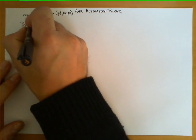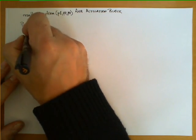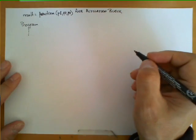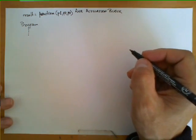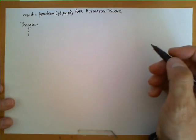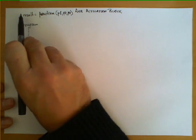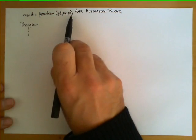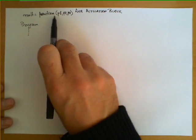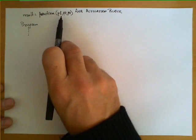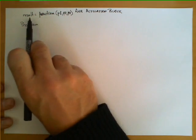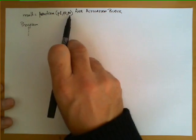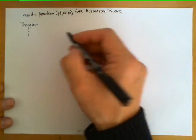This would be the program. We have a few instructions, and then at some point we need to create the activation block. The first thing we need to do is realize that we have the result and three parameters. We assume that both the result and the parameters are 8-bit numbers, so we need four locations in the stack: the first one to store the result, and then three additional ones for the parameters.